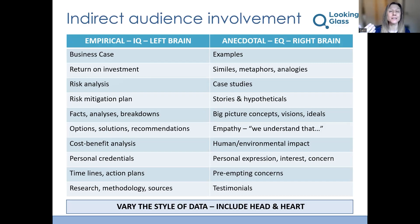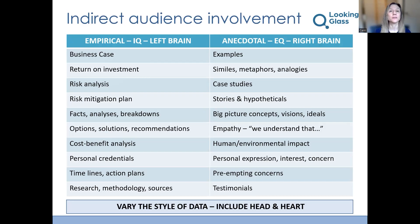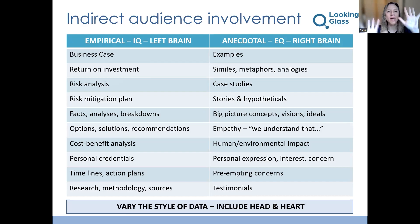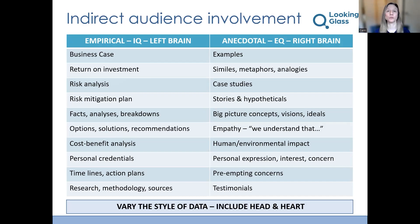There's also empathy — acknowledging that some of you may be feeling a bit nervous about this or that it may be uncomfortable. This is more personal, the right-brain, EQ stuff. What's the human or the environmental impact? We may not have stats around that — that would be left brain — but there may be some anecdotal content as well. Is there personal expression you want to bring to it? 'The thing I find most exciting about this' or 'the thing that concerns me.' You can flip that around and preempt their concerns: 'Some of you may be thinking,' 'some of you may be worried about,' 'some of you may have the question.' And finally, any testimonials you may want to bring. We want to vary this data deliberately, bringing in elements of both left brain and right brain to engage the whole human being in front of you.